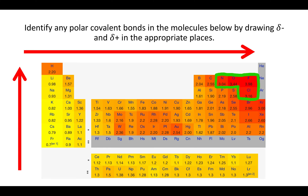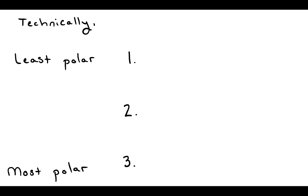The most electronegative atoms are nitrogen, oxygen, fluorine, and chlorine. So if you want to qualitatively look at a molecule and identify really significant differences in charge, look for N, O, F, and Cl. Those atoms are going to tend to be slightly negative because they pull the electrons in bonds toward them, meaning they're not sharing electrons equally with whatever atom they're bonded to. That's the qualitative way of assessing polar bonds.